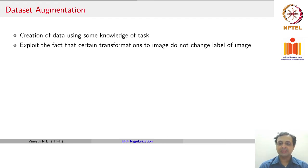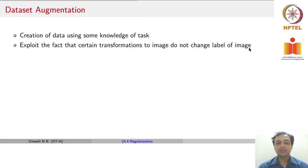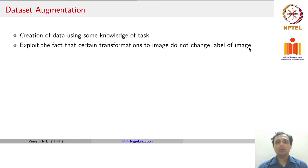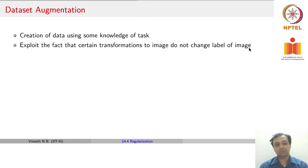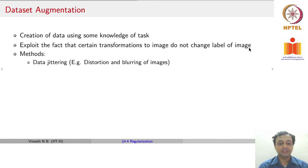You exploit the fact that certain transformations to the image do not change the label. For example, if you had a cat in an image, whether the cat was small in size, large in size, rotated by 30 degrees, or rotated the other way by 60 degrees, the cat is still a cat. So you take the original image, make these transformations, and train the model with all of them. Different things you can do: data jittering, which means blurring the image or distorting it a little bit to handle noise variations in your test data. You could also rotate the image.